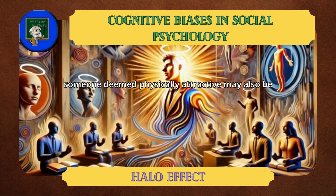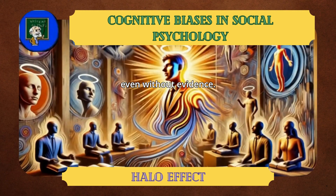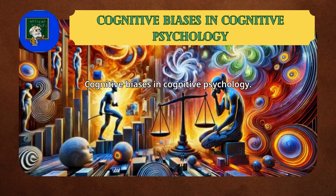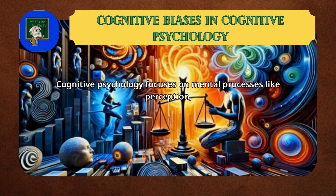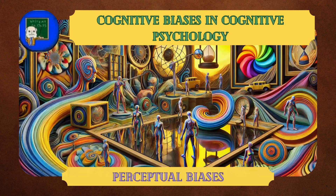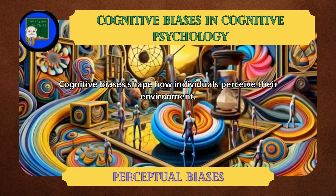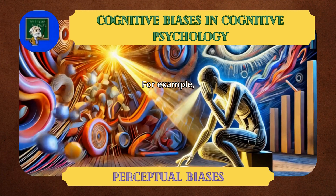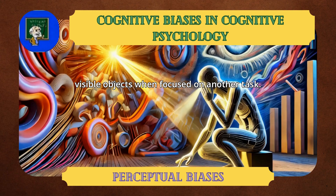For example, someone deemed physically attractive may also be assumed to be intelligent and competent, even without evidence. Cognitive Biases in Cognitive Psychology: cognitive psychology focuses on mental processes like perception, memory, and decision-making, where biases often manifest. Perceptual biases shape how individuals perceive their environment — for example, inattentional blindness highlights how people can miss visible objects when focused on another task.